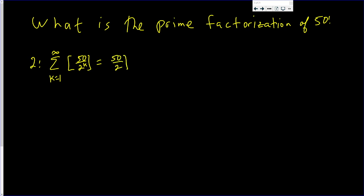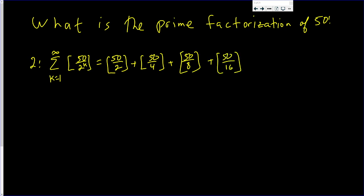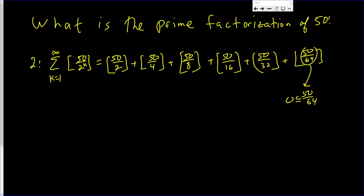We're going to get the greatest integer function of 50 over 2, plus the greatest integer function of 50 over 4, plus the greatest integer function of 50 over 8, plus the greatest integer function of 50 over 16, plus 50 over 32. The next power of 2 is 64, and 50 over 64 is less than 1 — this number is between 0 and 1.